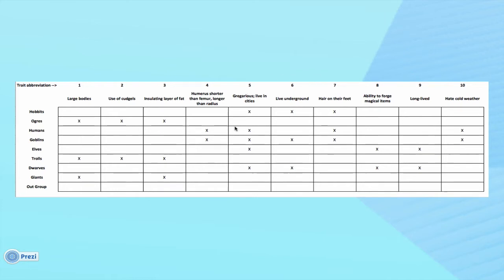Looking at the most commonly shared synapomorphies, we can identify most recent common ancestors. For instance, hobbits, humans, goblins, elves, and dwarves are all gregarious — they live in cities — so perhaps the common ancestor among all of them was gregarious and lived in cities, which would be a derived character state in just that lineage.